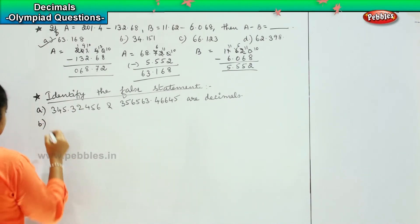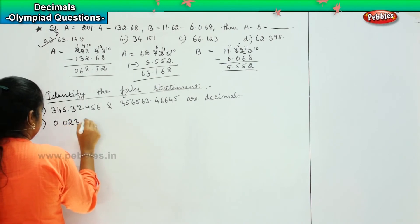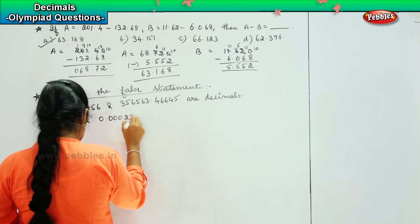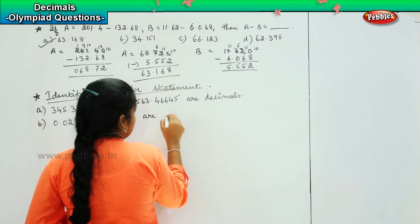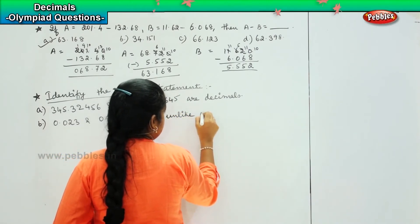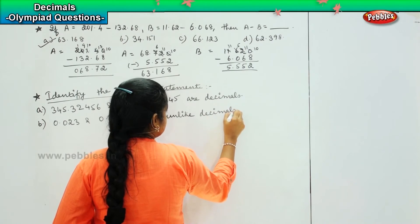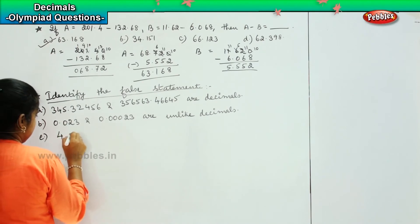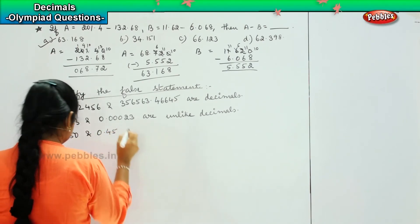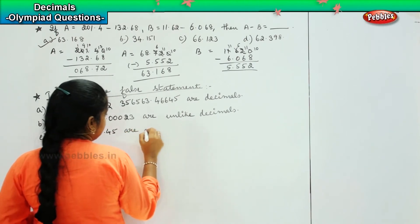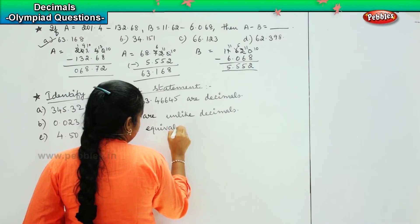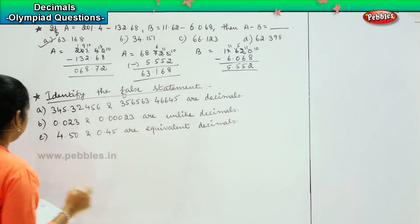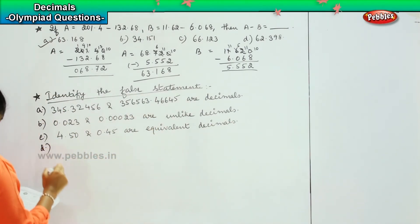Option B, 0.023 and 0.00023 are unlike decimals. Option C, 4.50 and 0.45 are equivalent decimals. And option D, all of these.